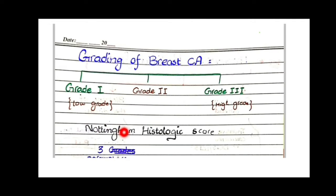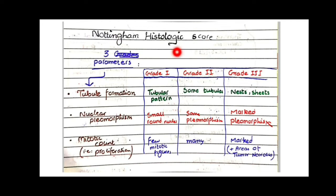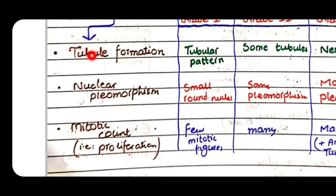For grading we use a scoring system called the Nottingham Histological Score, based on three parameters that classify tumors into grade 1, 2, and 3. These features are tubule formation, nuclear pleomorphism, and mitotic count — you can remember them with the mnemonic T-N-M: T for tubule formation, N for nuclear pleomorphism, and M for mitotic count.